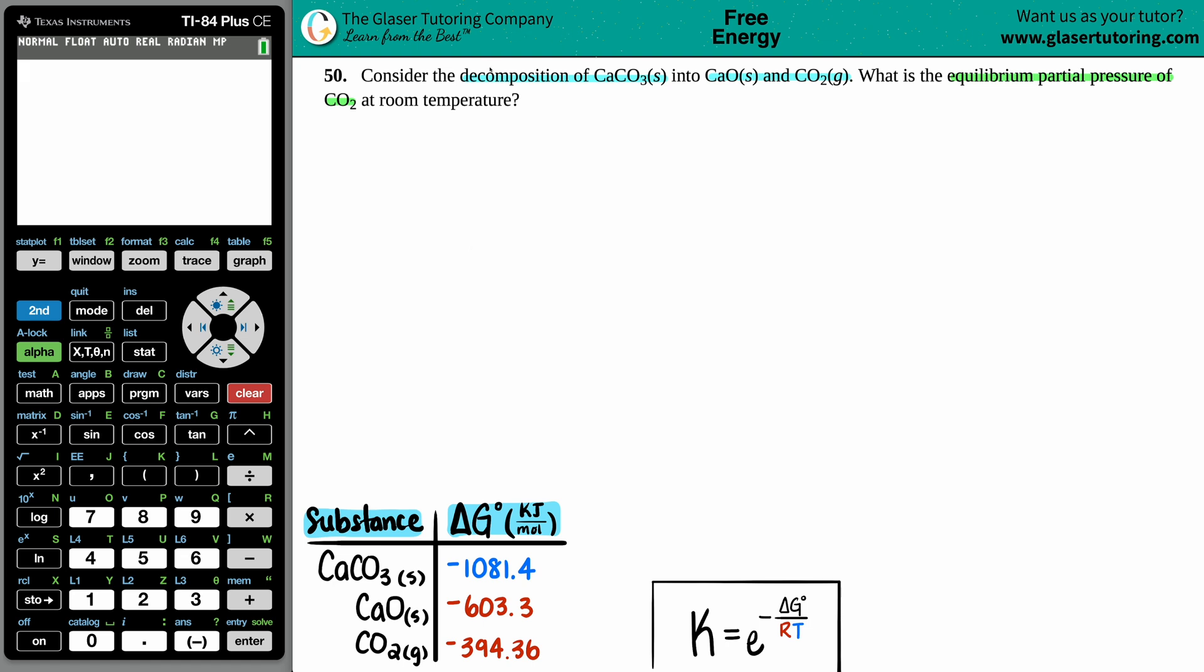So I know that I have CaCO3, that's a solid, and this will decompose, aka breakdown, into the calcium oxide CaO, that's a solid.